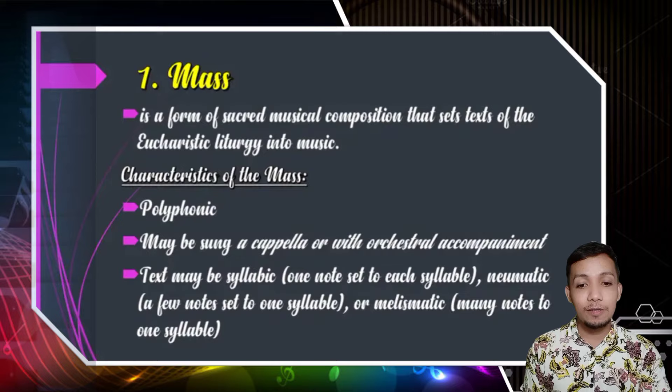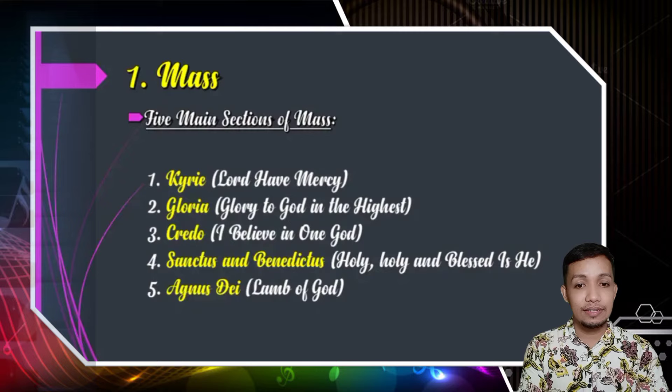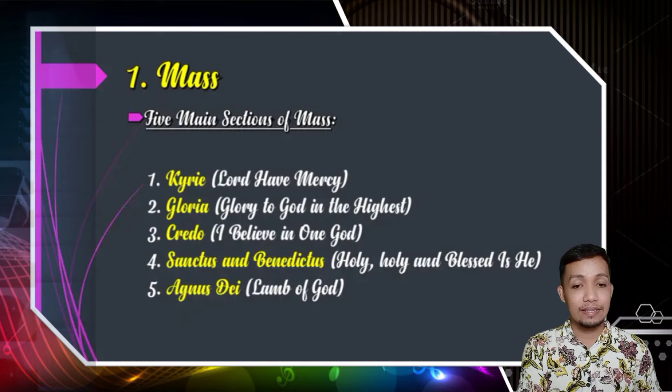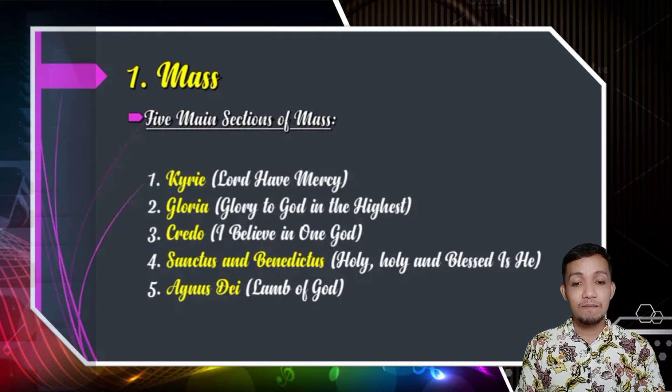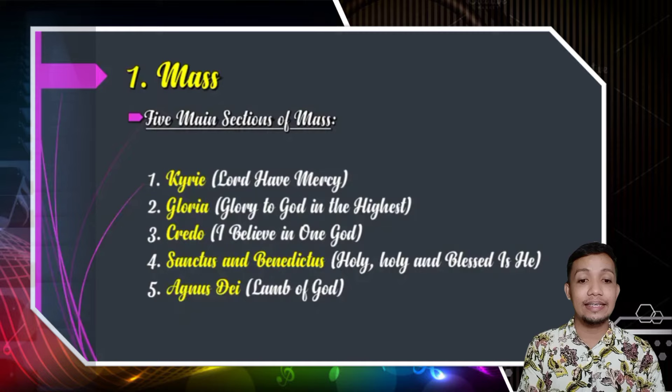There are five sections of Mass. First one is Kyrie, or Lord Have Mercy. Second one is Gloria, or Glory to God in the Highest. Third one is Credo, or I Believe in One God. Fourth one is Sanctus and Benedictus, or Holy, Holy and Blessed is He. And Agnus Dei, the last one, or Lamb of God.